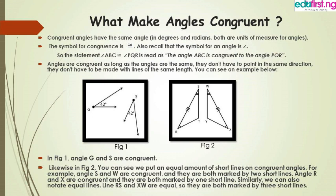Also, angle R and angle X are congruent. Angle R in triangle RSC and angle X in triangle YWX are both marked by a single short line. We can also see that line RS in triangle RSC is equal to line XW in triangle YWX — they are both marked by three short lines. This is how you identify congruency and determine if two triangles are congruent.